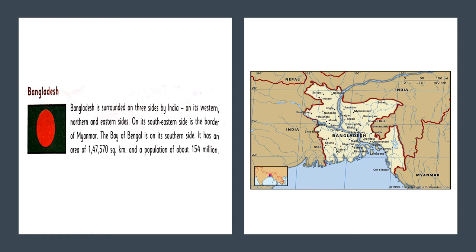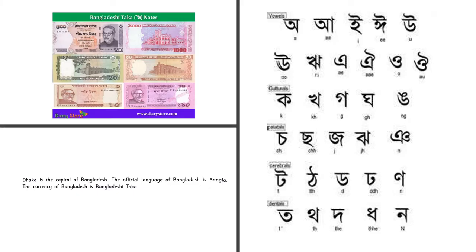Bangladesh has an area of 1,47,570 square kilometers and a population of approximately 154 million. Dhaka is the capital of Bangladesh. The official language is Bangla, and the currency is the Bangladeshi Taka.